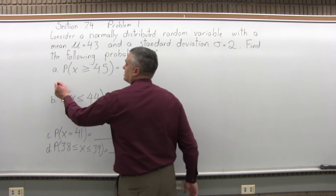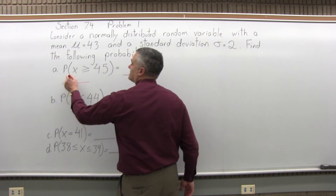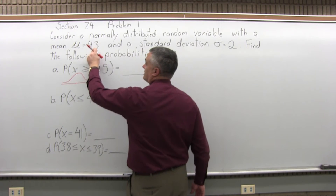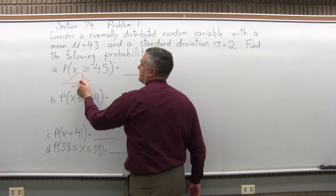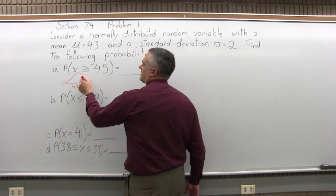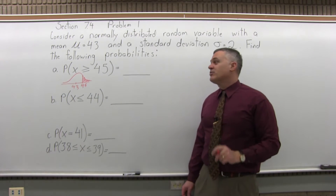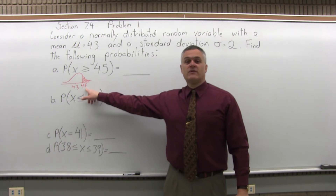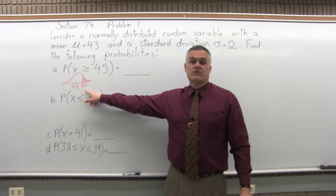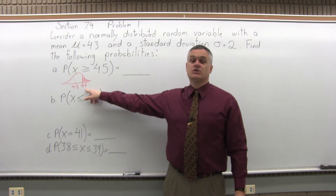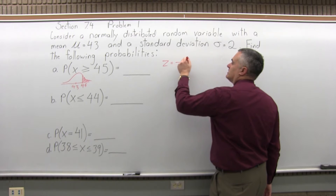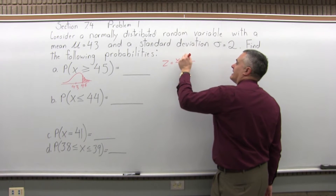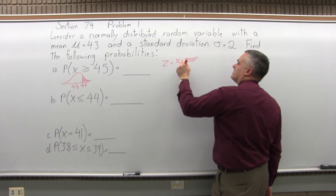Visually, we have a normal probability distribution where the mean is the middle value, 43. Since 45 is a little bigger, it sits to the right, and we want the probability that x is bigger than that. We can't just look up 45 in the standard normal chart — we have to find the z-score for 45. So we'll use the formula z equals x minus the mean over the standard deviation.